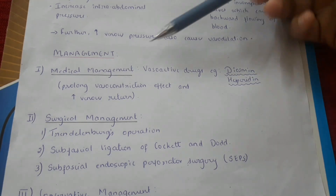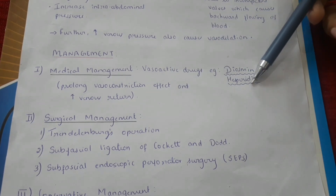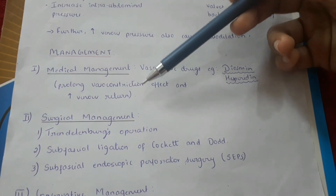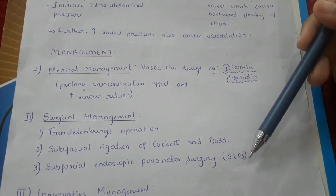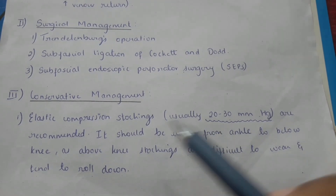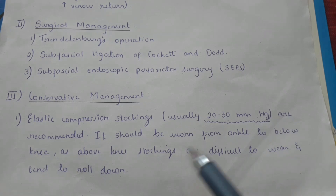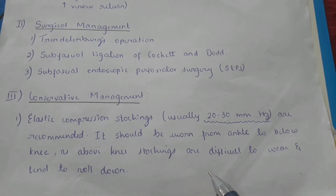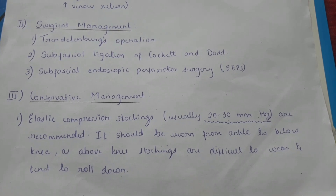Management of varicose veins. Medical management includes administration of vasoactive drugs — for example, Diosamine and Hesperidine. These vasoactive drugs prolong the vasoconstriction effect and increase venous return. Surgical management includes Trendelenburg's operation, subfascial ligation, and endoscopic perforator surgery. Conservative management includes elastic compression stockings — usually 20–30 mmHg are recommended, to be worn from the ankle to below the knee, as above-the-knee stockings are difficult to wear and tend to roll down.